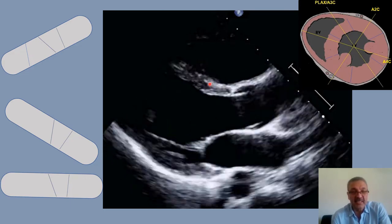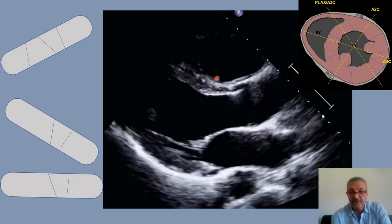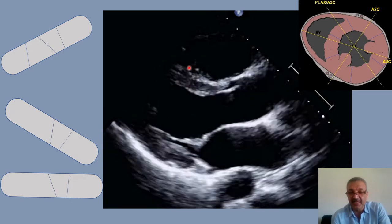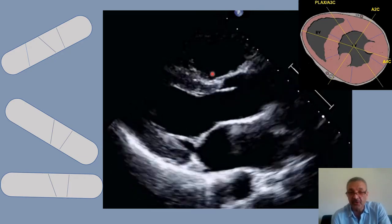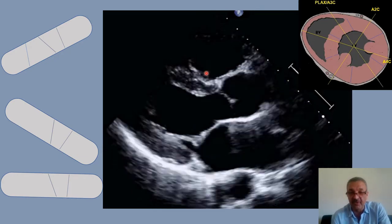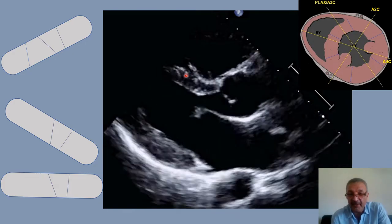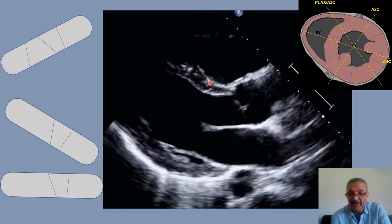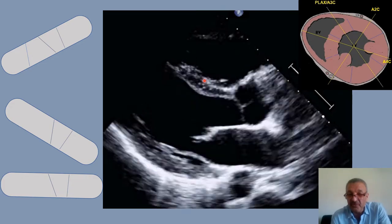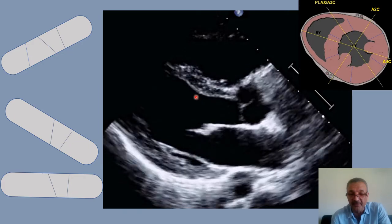Another point: at the septum, if you notice trabeculation — irregular indentation on the right ventricular side — do not include that in your IVS measurement. If you look carefully, you see a hyperechoic line at the right ventricle side of the IVS. That is your border where you place your marker and measure from there to the endocardium.